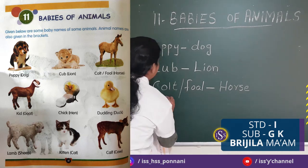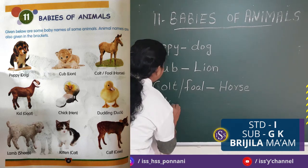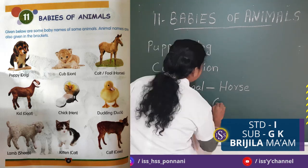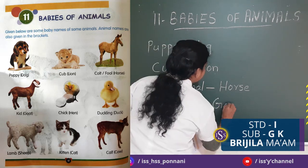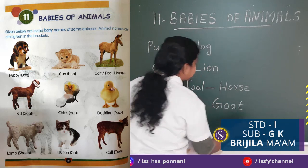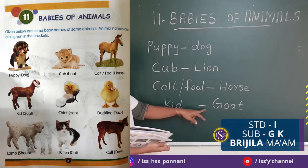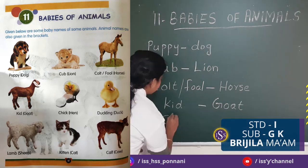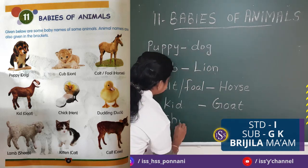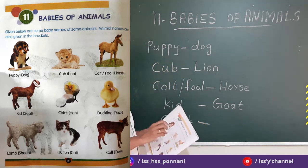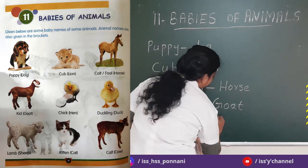Next — Kid. What's the name of the baby? Kid. What's the name of the animal? Goat. The goat's baby is called Kid. Next animal is Hen, and the baby is called Chick.